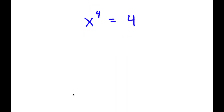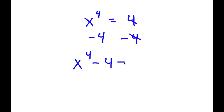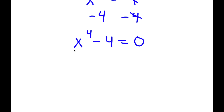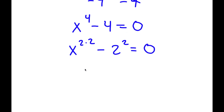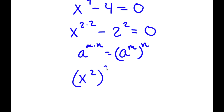All right, so on this problem, I have x to the power of 4 is equal to 4. To solve this, I'm going to first subtract 4 on both sides, so I'm left with x to the power of 4 minus 4 is equal to 0. Now, I can rewrite x to the power of 4 as x to the power of 2 times 2, and rewrite 4 as 2 to the power of 2. If I have something in the form a to the power of m times n, this equals a to the power of m to the power of n. So x to the power of 2 times 2 equals x squared to the power of 2, minus 2 to the power of 2, equals 0.